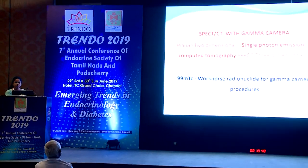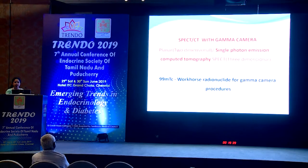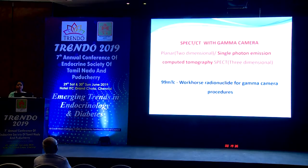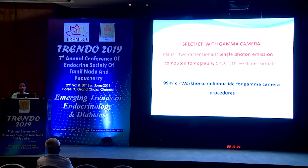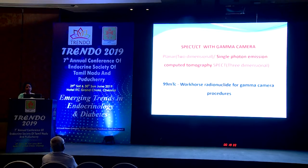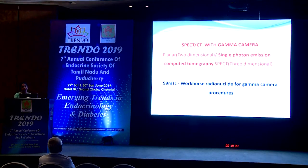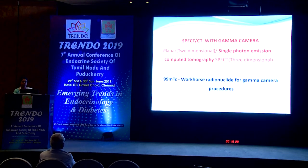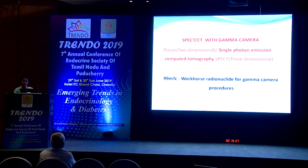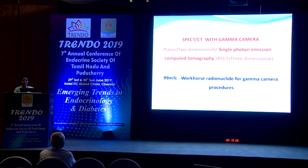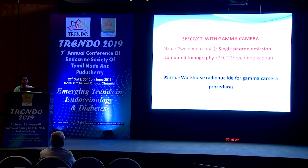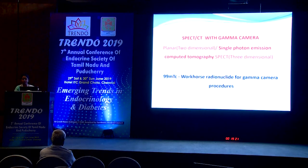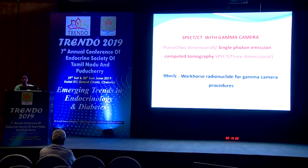Functional imaging is done by two important modalities. One is with the gamma camera, through which two-dimensional planar imaging and three-dimensional SPECT imaging — single photon emission computed tomography — can be acquired. Technetium-99m is the workhorse radionuclide for all gamma camera procedures.